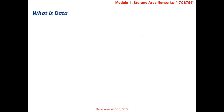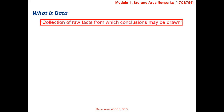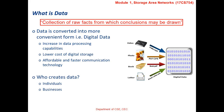Now let us look at the definition of data. Data is a collection of raw facts from which conclusions may be drawn. Data may be in physical form, but if converted to digital form, we call it digital data. Digital data is more convenient to handle because of two reasons: first, the increase in data processing capabilities; and second, lower cost of digital storage as well as affordable and faster communication technology. Individuals as well as businesses are the data creators. If you digitize videos, photographs, books, letters and so on, you get digital data that can be handled in a much more convenient way.